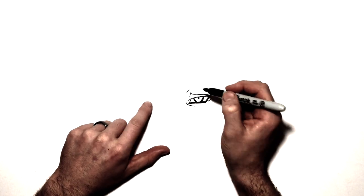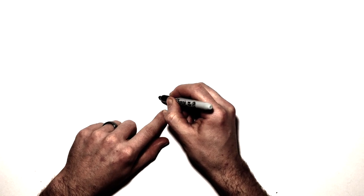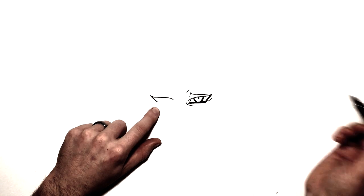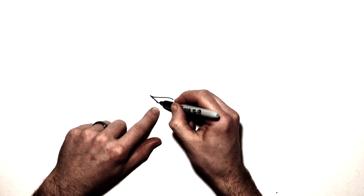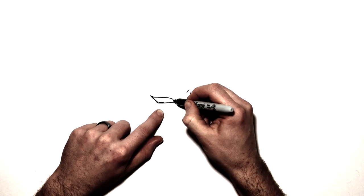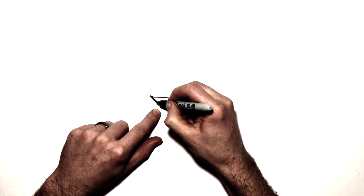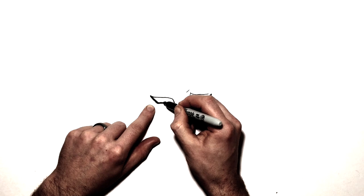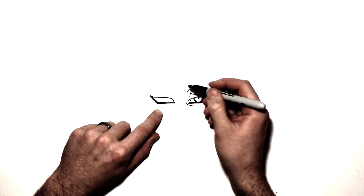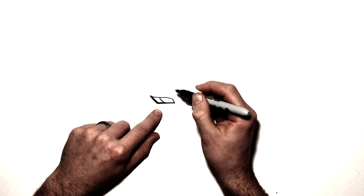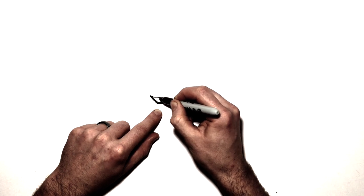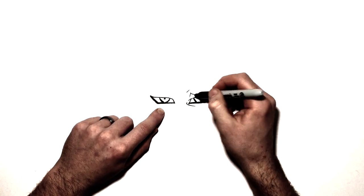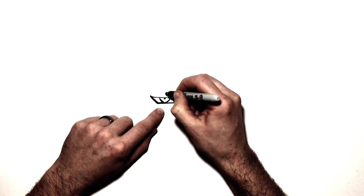Then we'll go over and do the same thing on the other side. So it's pretty much the same — we start with a curvy line up like that. Comes to a point and starts to come back down, then comes back down, then comes across and down the other side. We can thicken these up again. Then we have his eye inside — curves down, curves back up, pupil in the middle.